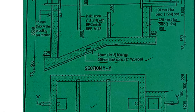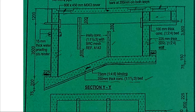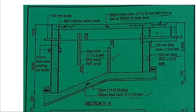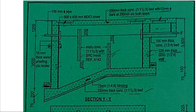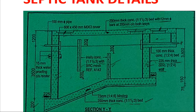We have the exit pipe going that way and these are our buffer walls. You can also notice the height dimensions: from the inlet pipe down to the bottom is 350 millimeters, and the wall protrudes upwards by 500 millimeters above that point.